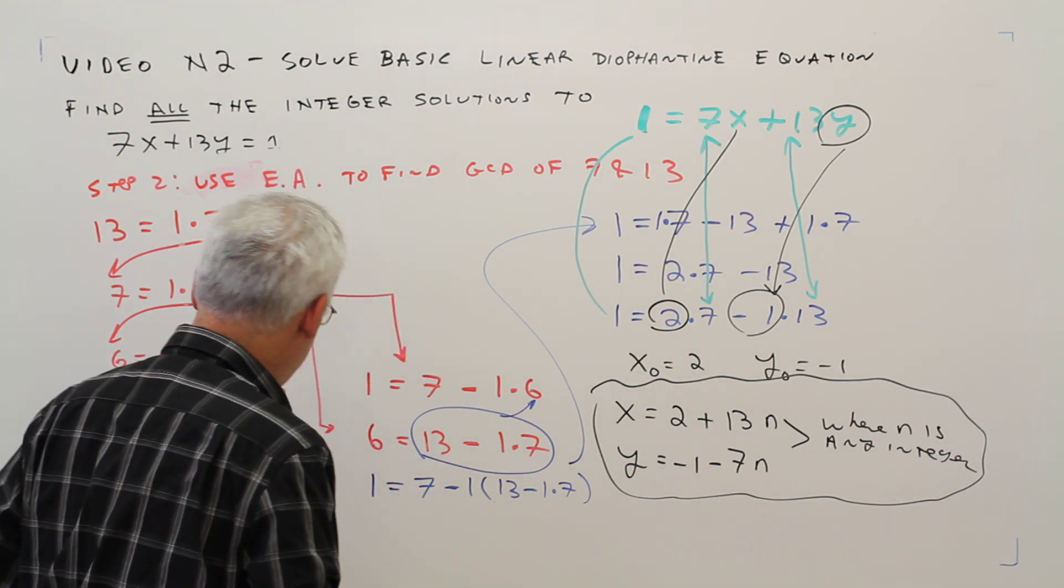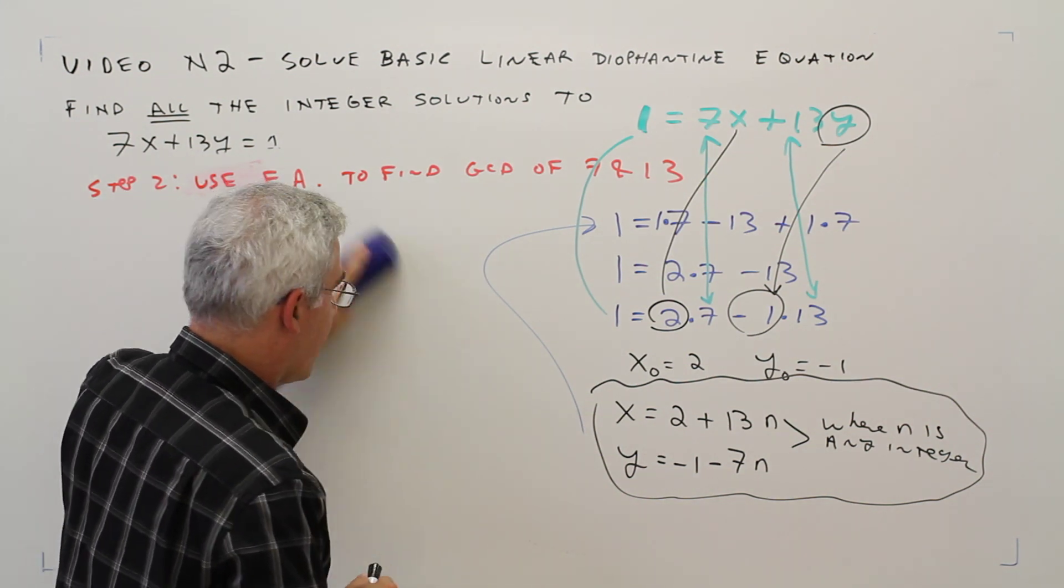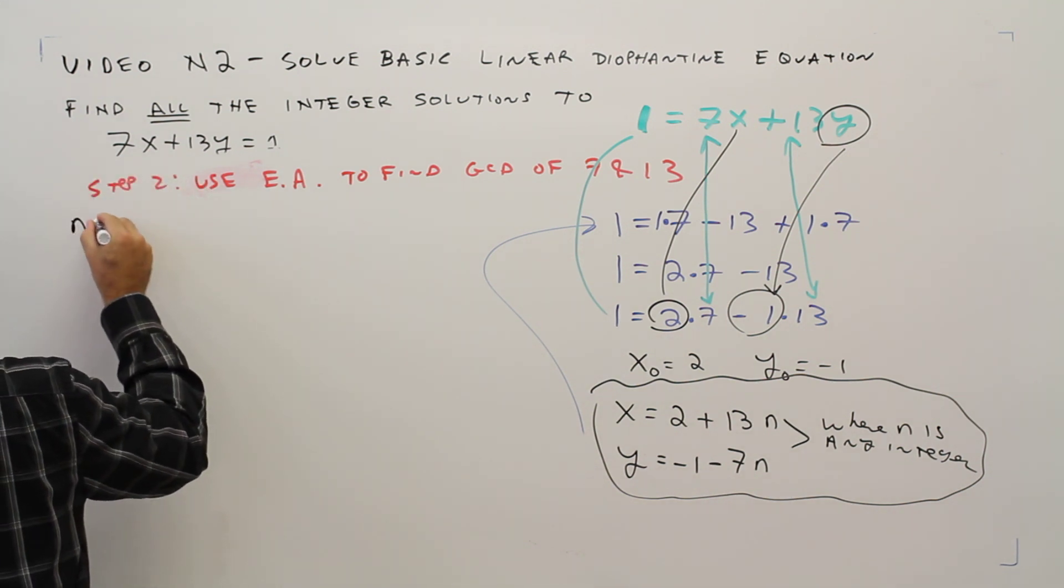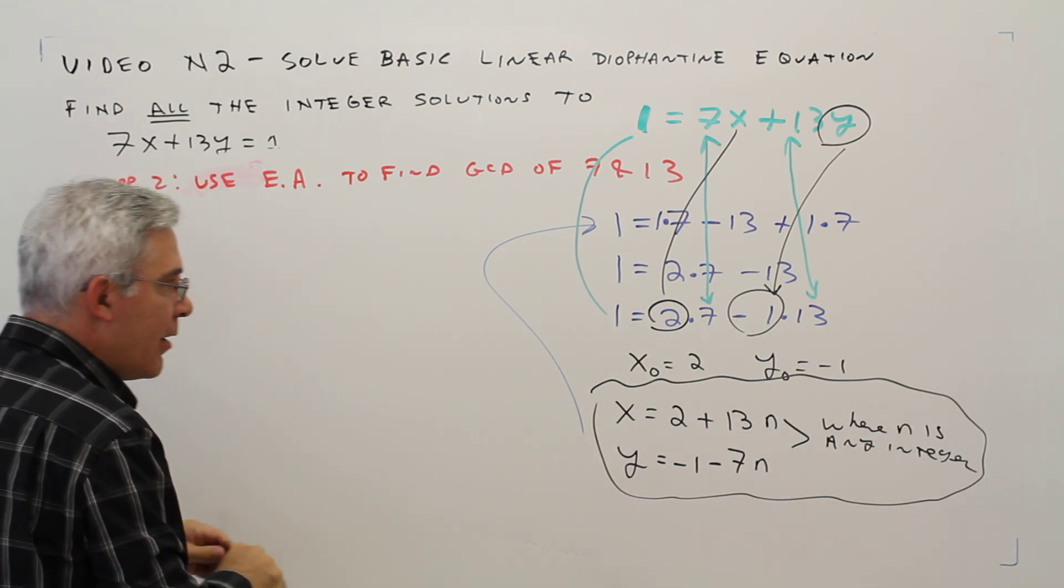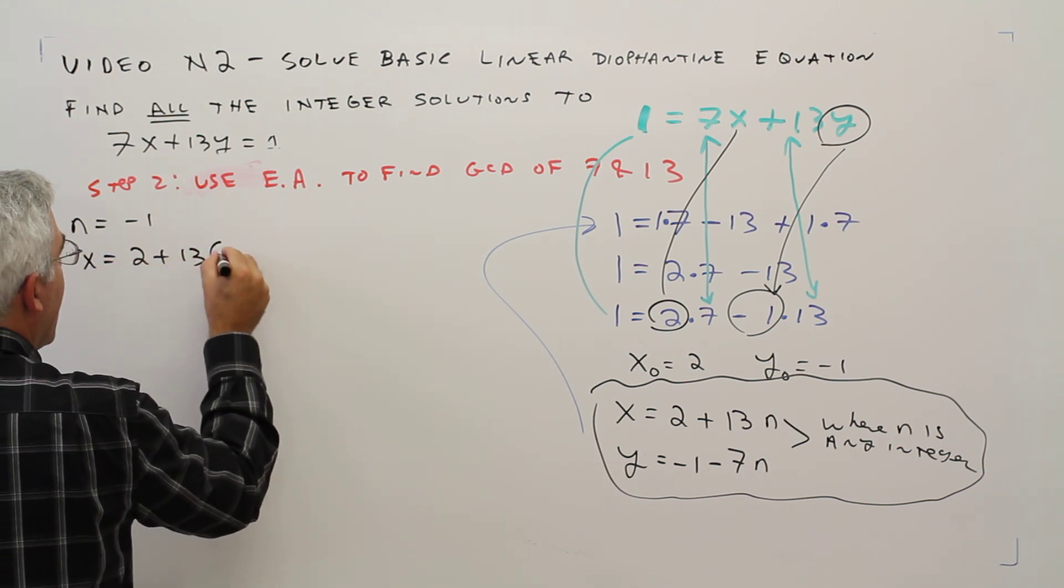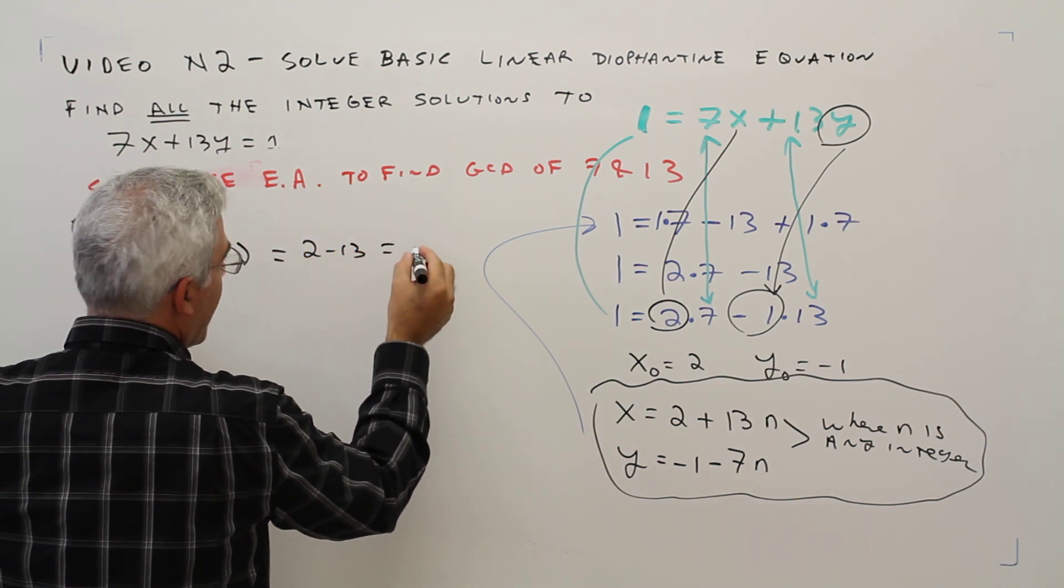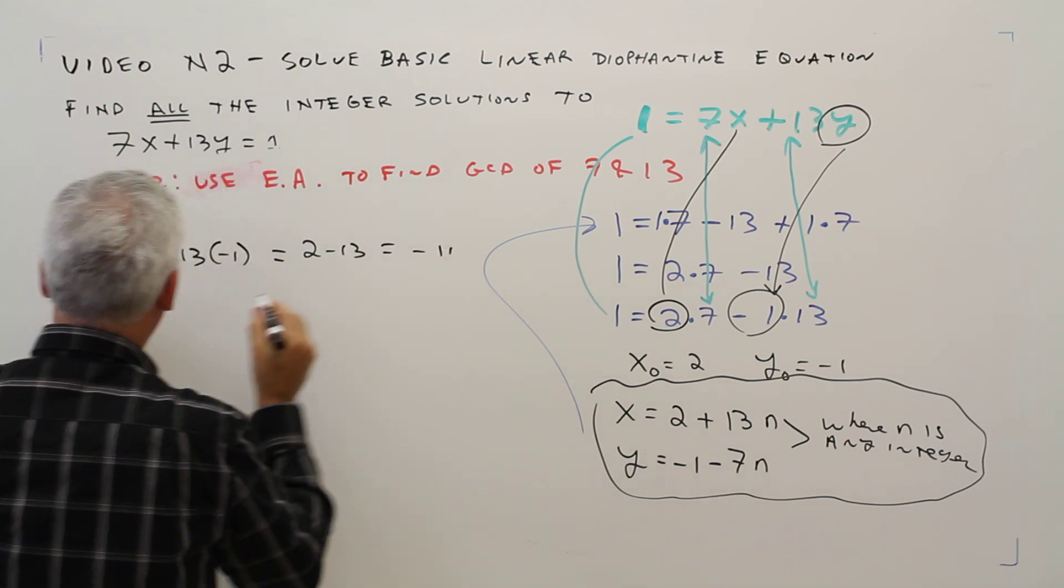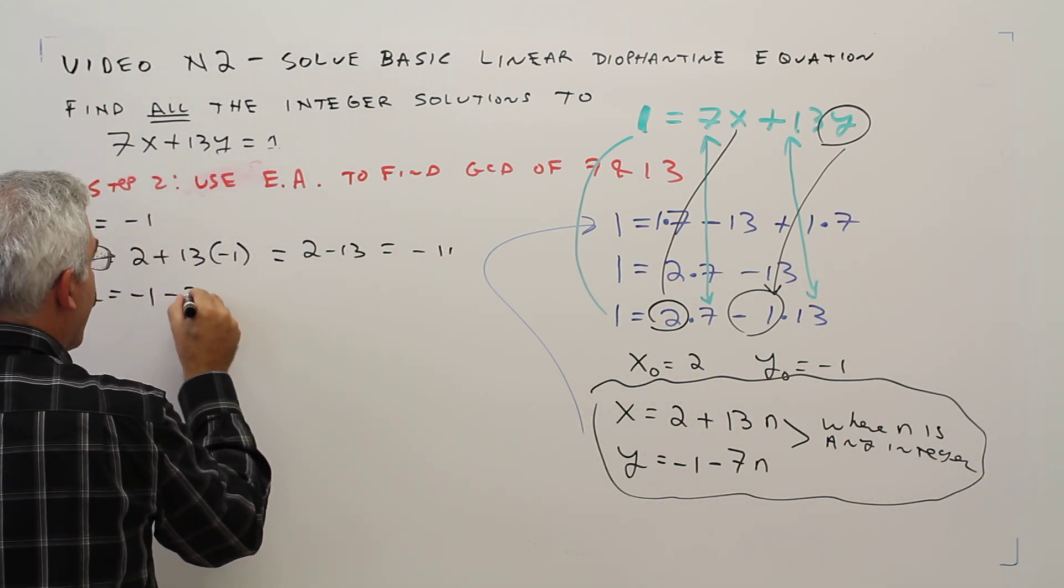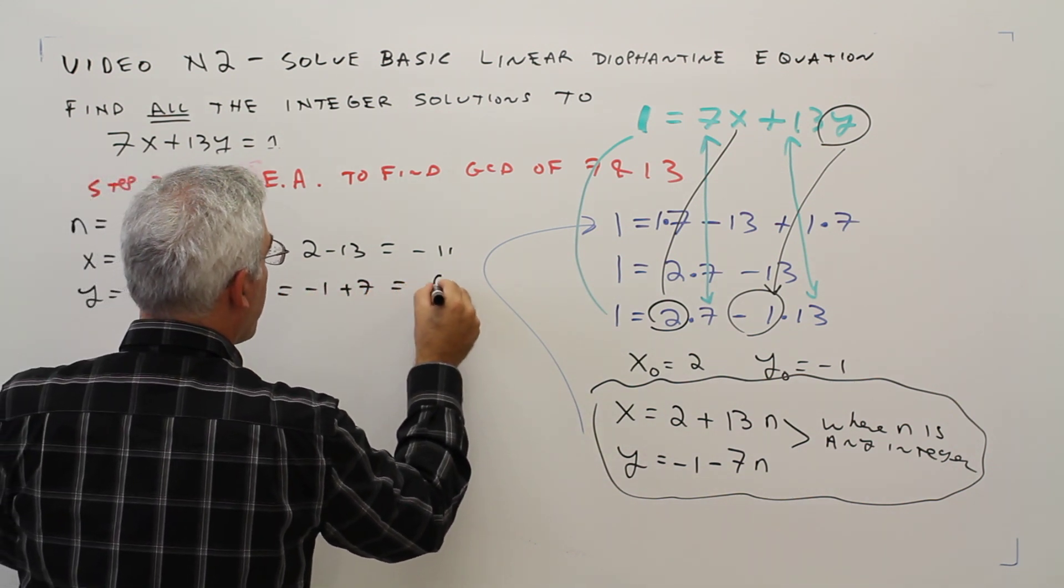One more thing, just since it's the first time, let me generate three specific solutions. I've already had one, but just to show you, I could let n equal negative 1, in which case x would be 2 plus 13 times negative 1 which would be 2 minus 13 which would be negative 11. y would be negative 1 minus 7 times negative 1, negative 1 plus 7 which would be 6.